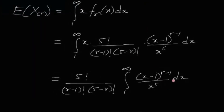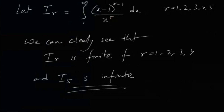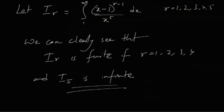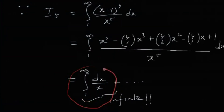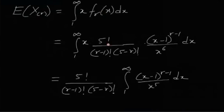The only part that might seem difficult is this integral, but it's actually not — we don't even have to fully expand it. Just by inspection: for r = 1 it's 1/x^5, which integrates to x^(−4)/(−4), clearly finite. For r = 2 it's (x−1)/x^5, giving integrals of 1/x^4 and 1/x^5, both finite. This pattern continues for r = 2, 3, 4. But for r = 5, the leading term produces ∫ dx/x = log x, which diverges. Do like, share, and subscribe to the channel for more exciting problems. See you next time!